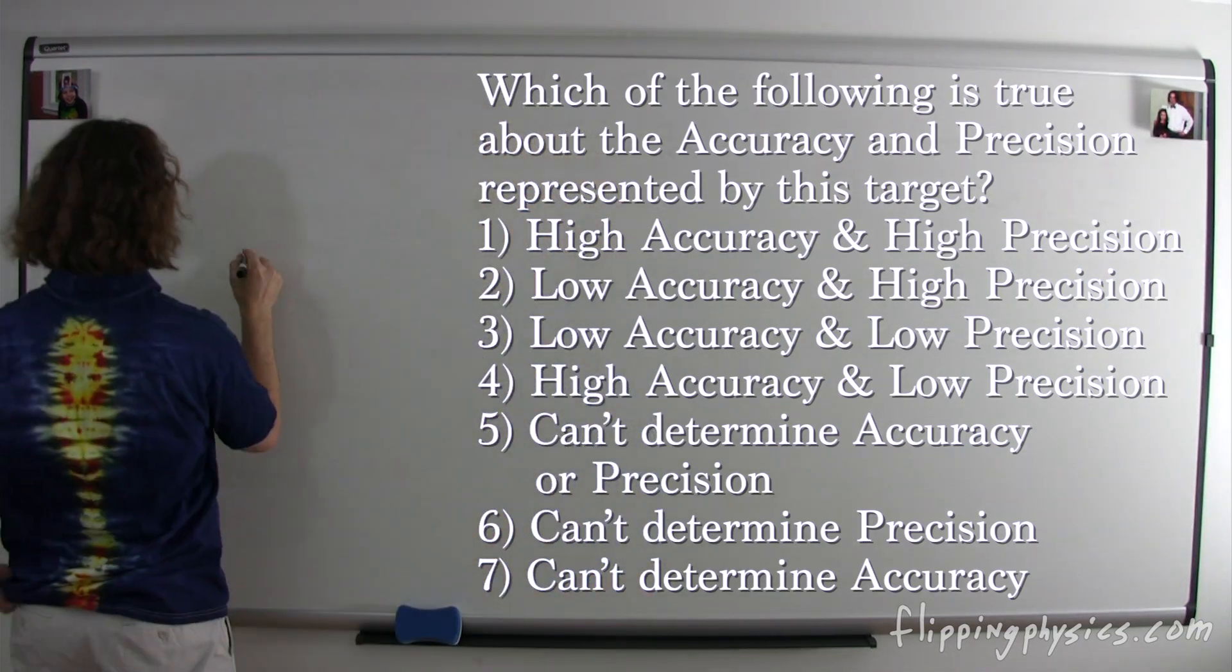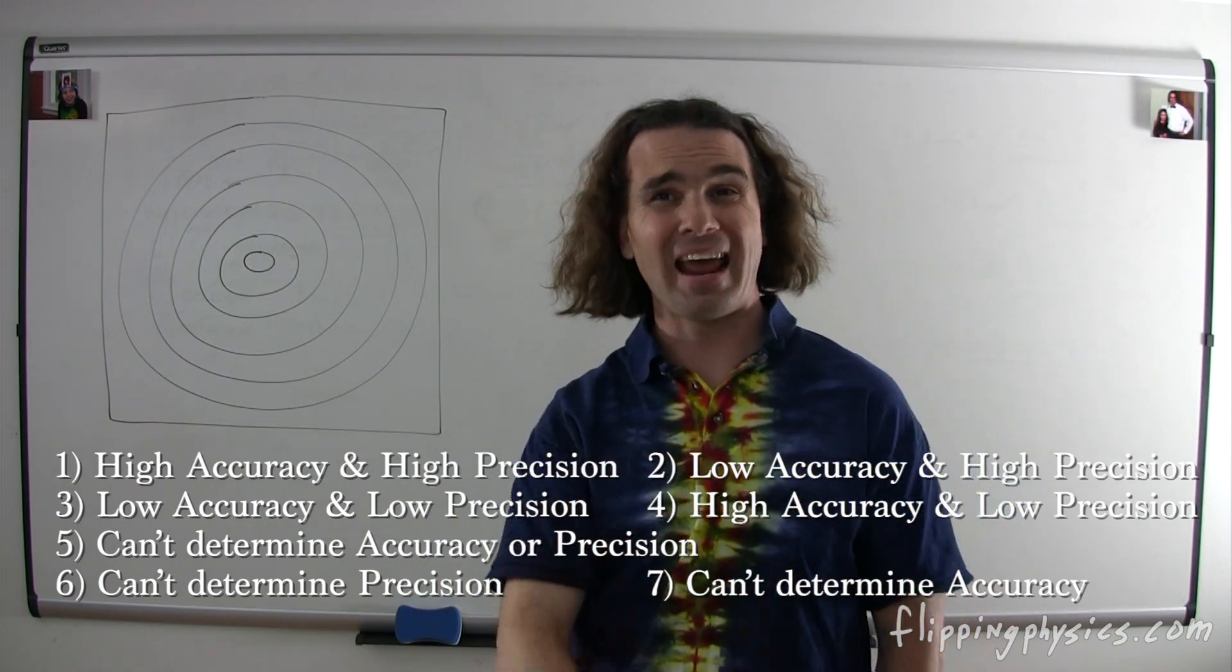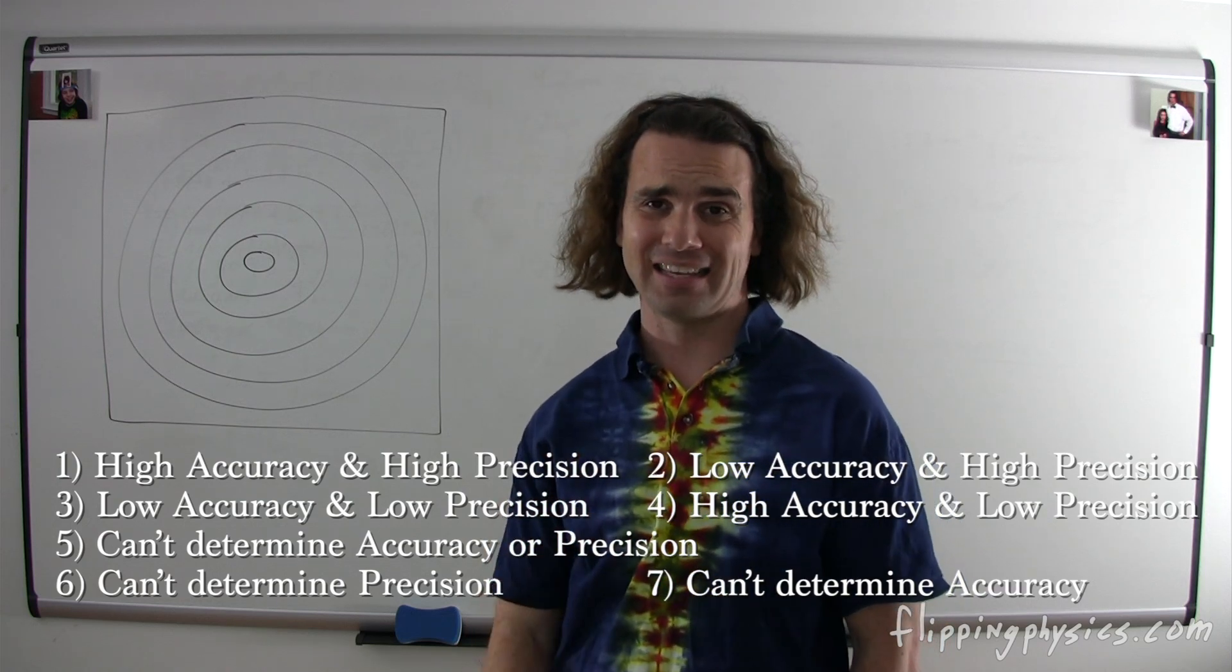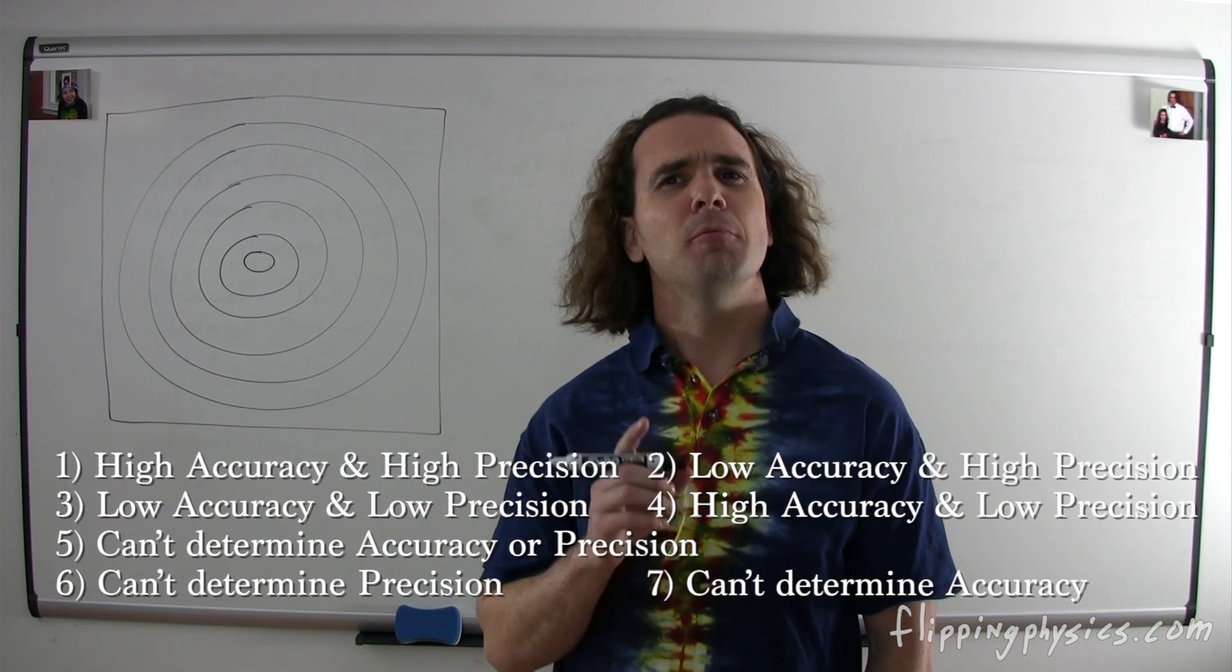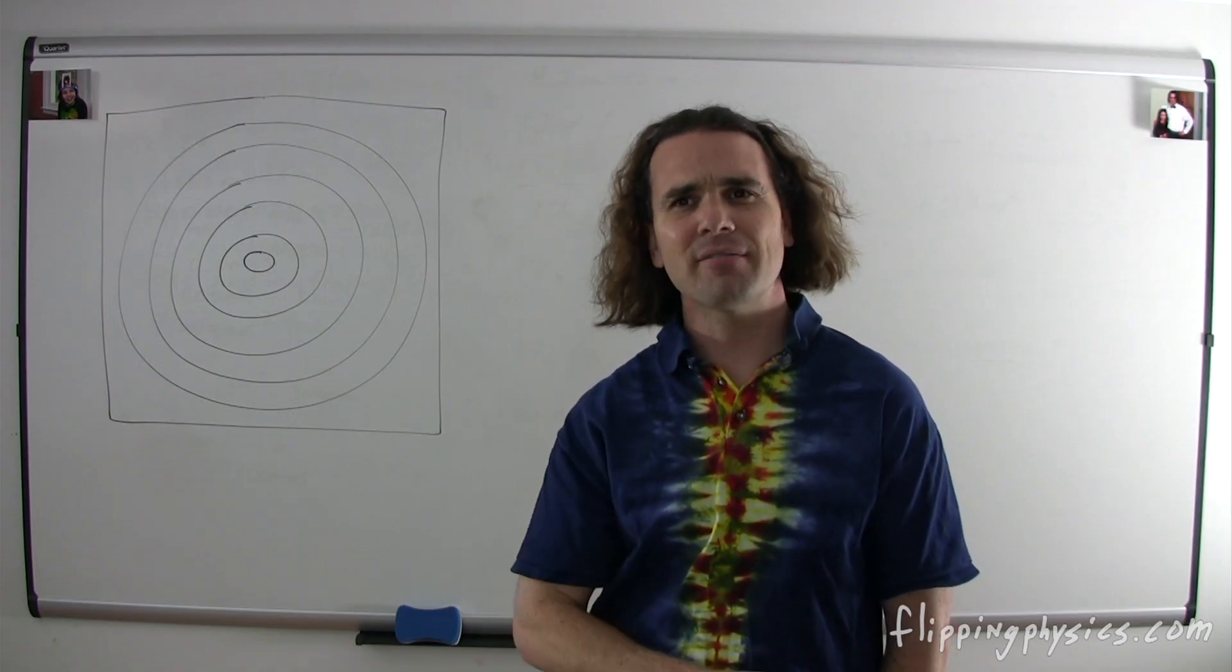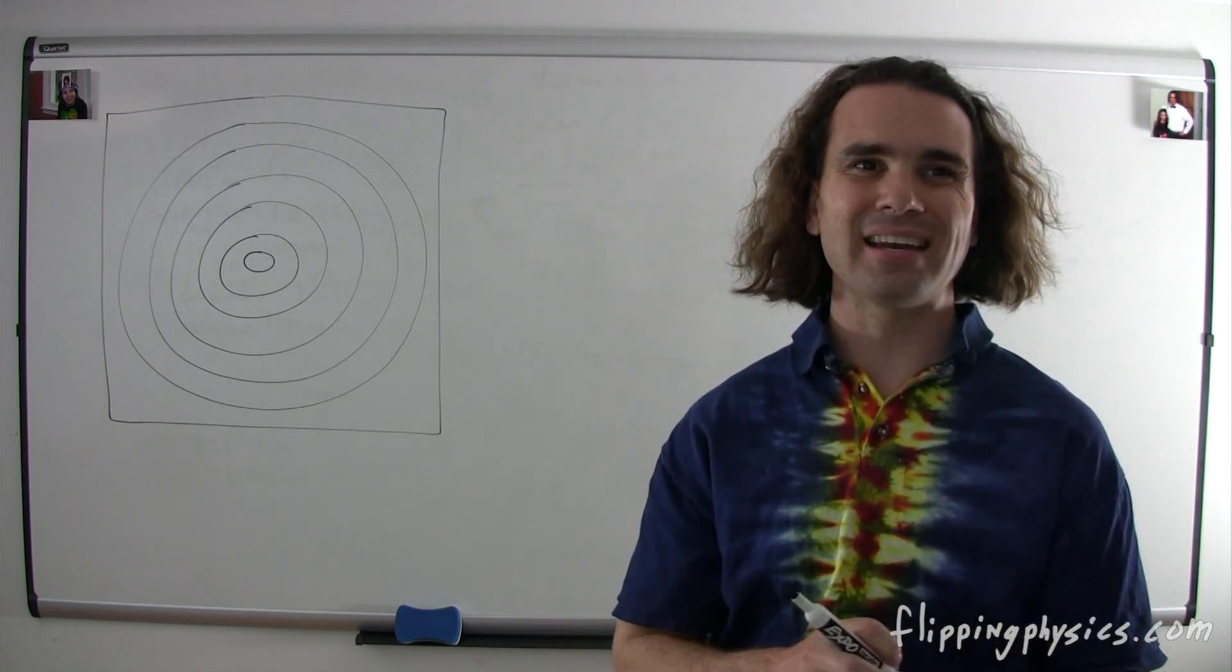And I'll draw the target in just a minute. One, high accuracy and high precision. Two, low accuracy and high precision. Three, low accuracy and low precision. Four, high accuracy and low precision. Five, can't determine accuracy or precision. Six, can't determine precision. And seven, can't determine accuracy. So, let me draw the target. Now, I'm going to shoot arrows at this target. Please realize that I was in my middle school's archery club in eighth grade. That's how cool I am. Oh, and one more thing. Before I shoot my first arrow, Billy, where am I attempting to shoot my arrow? At the bullseye. And where is the bullseye? In the very middle of the target.